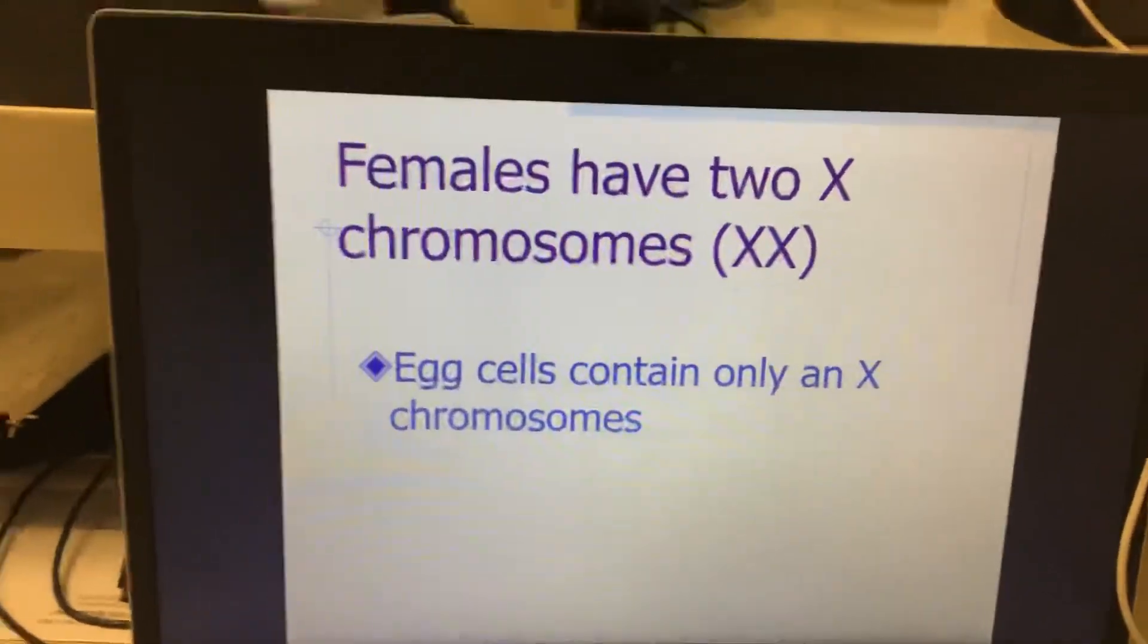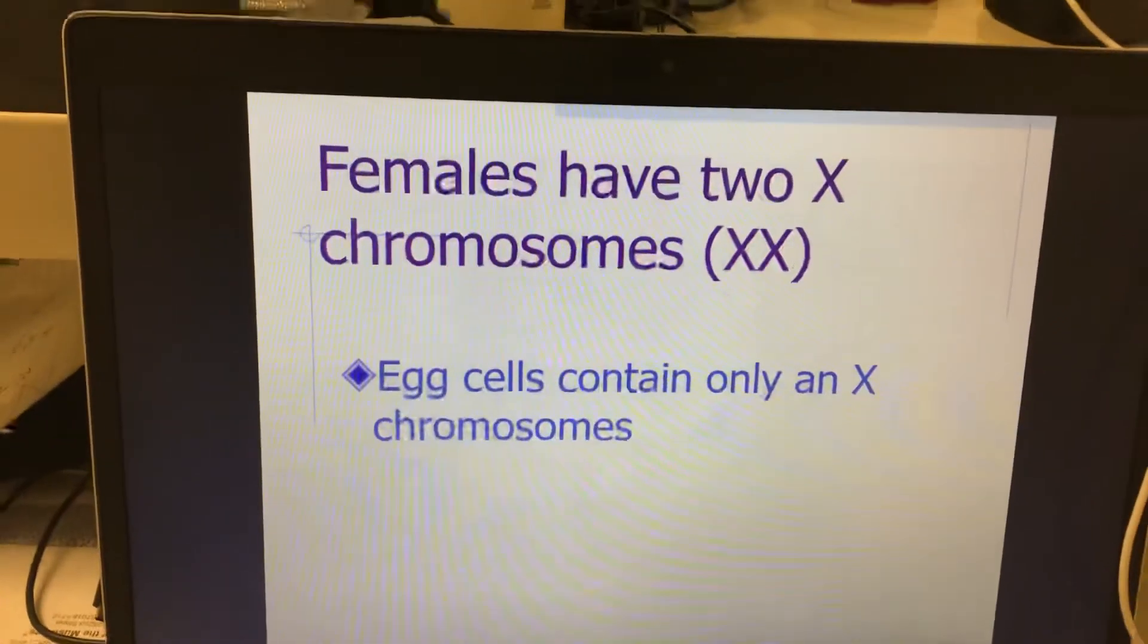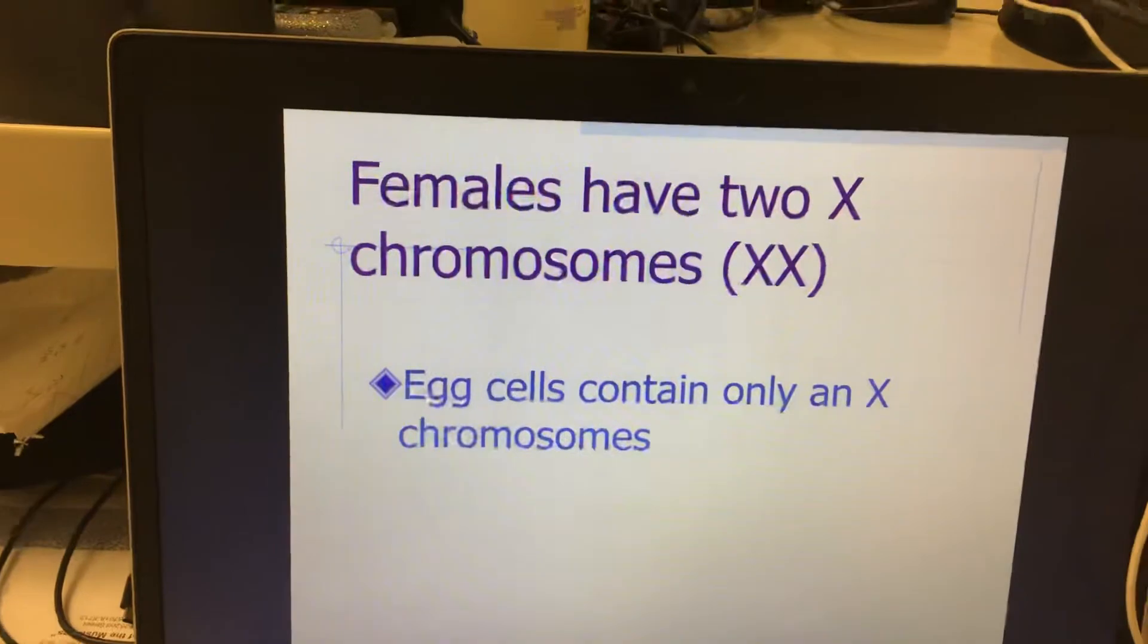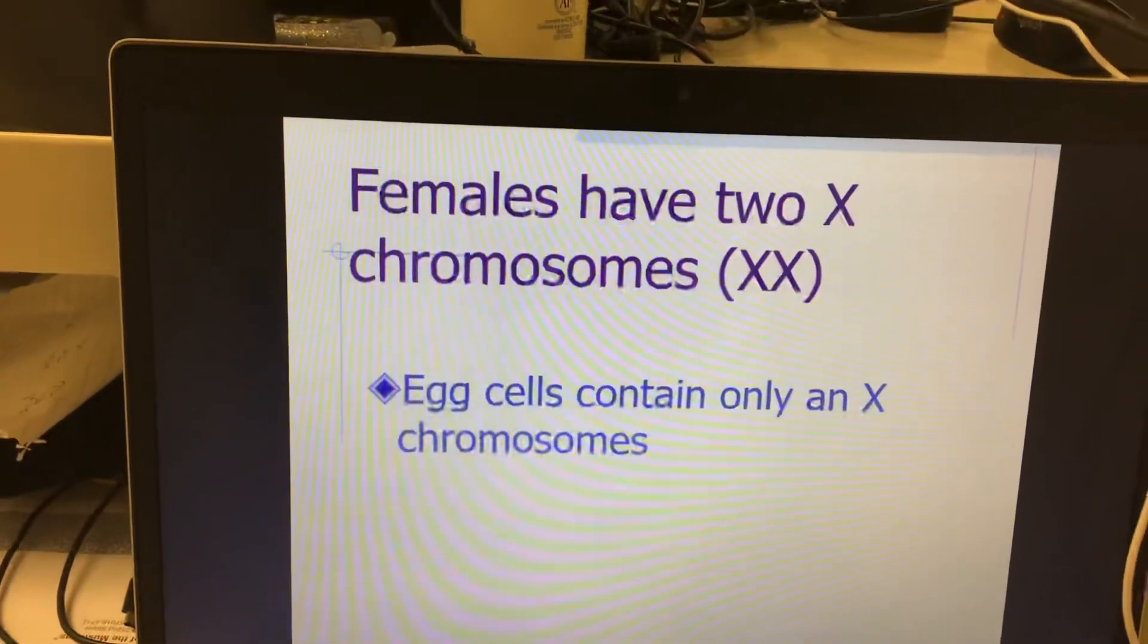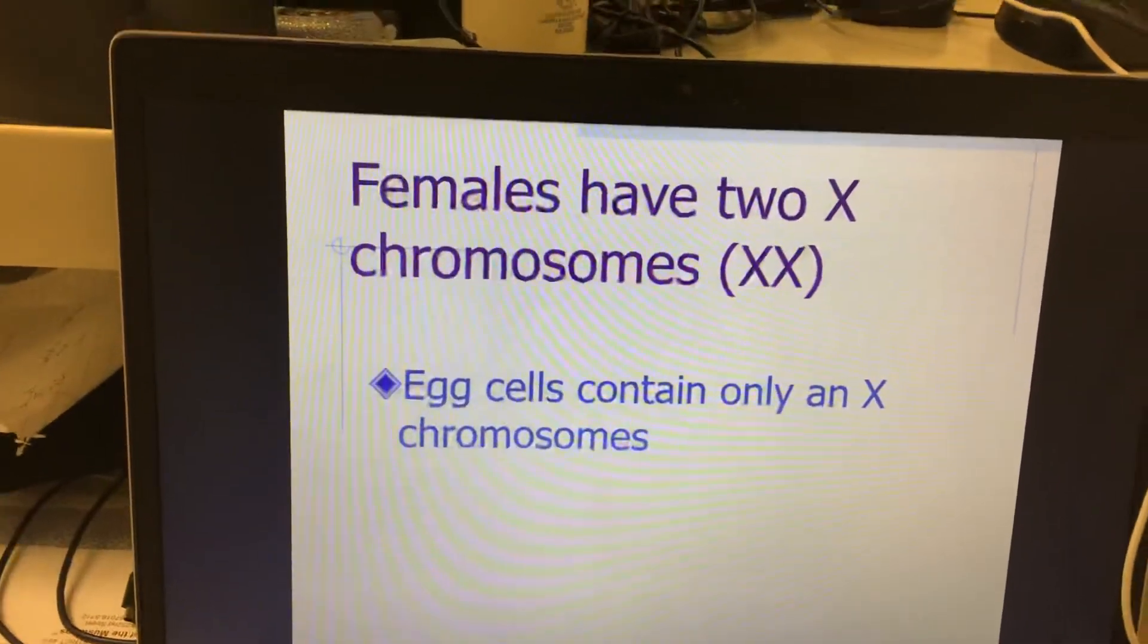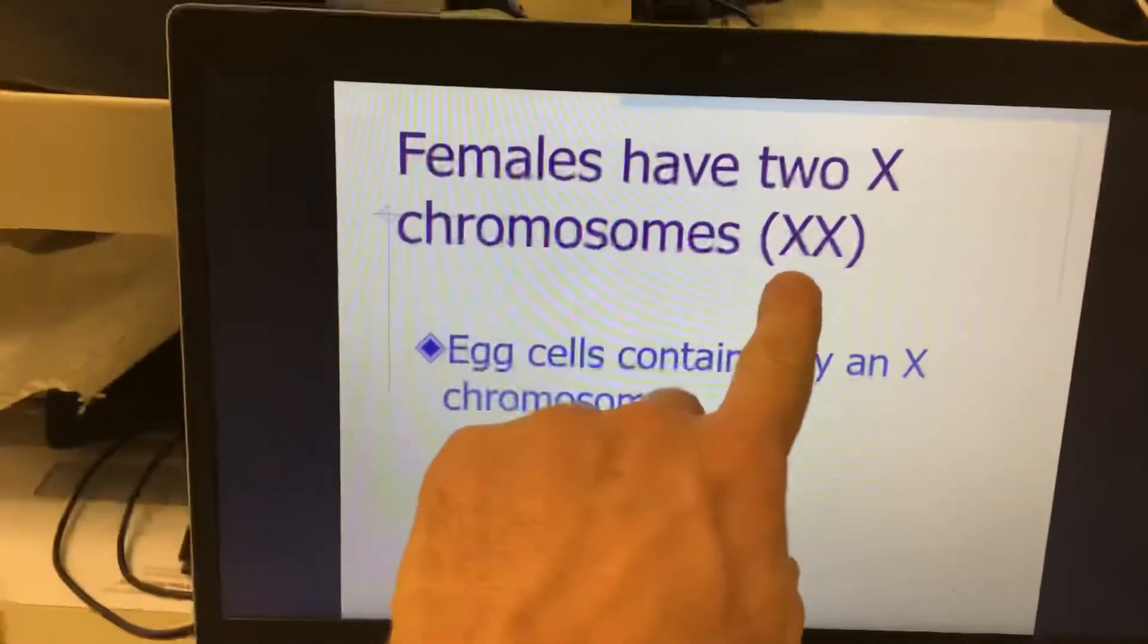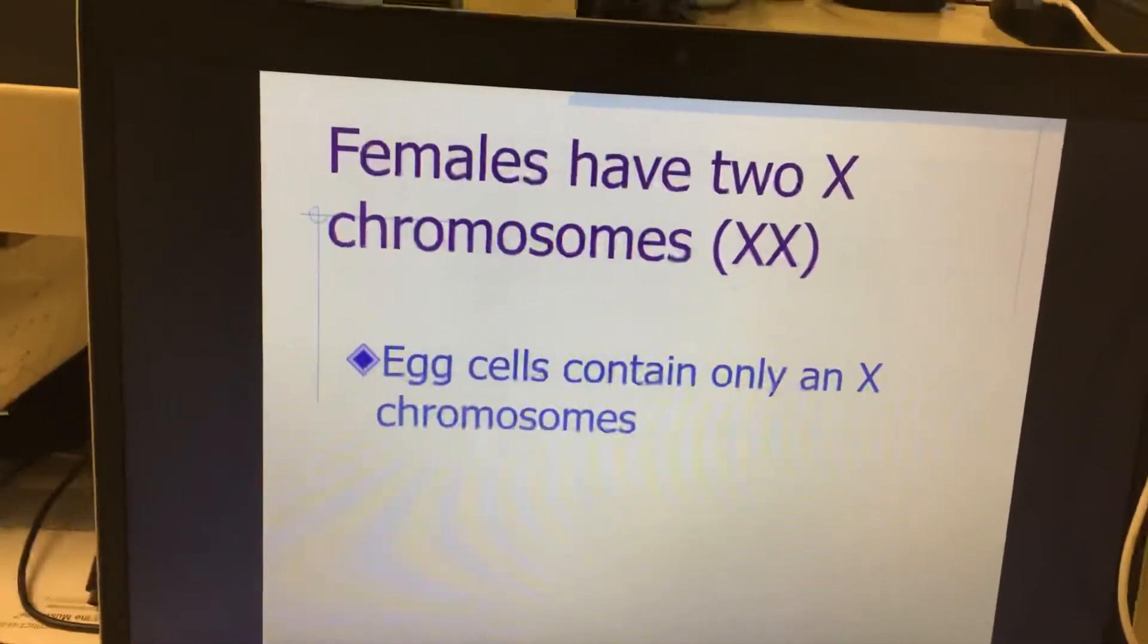I would like you to write this down. Females have two X chromosomes, XX. Females have two X chromosomes, an X and an X. When they made you, you're going to get an X from mom. It might be this one, it might be this one, but it does not matter. You are getting an X chromosome from mom.